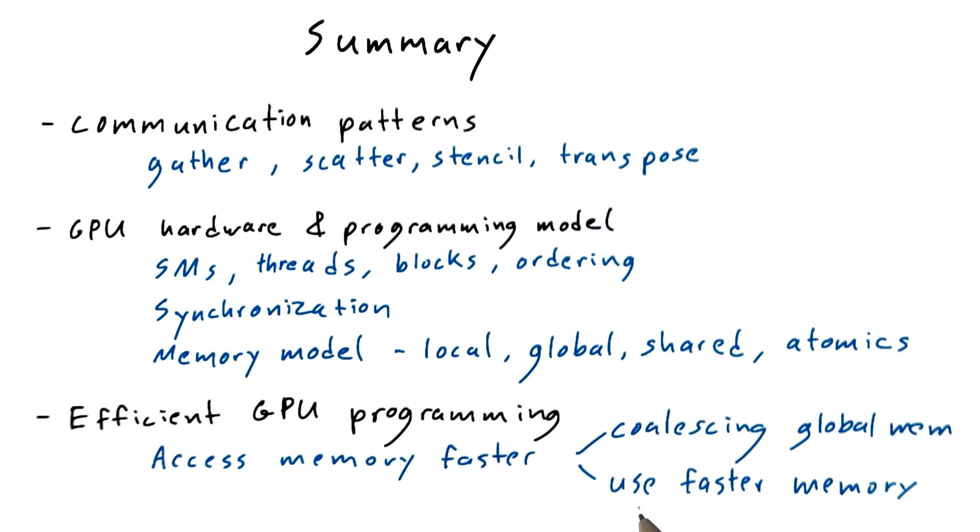We also learned to move frequently accessed data to faster memory, so for example, promoting data to shared memory. And we learned that atomic memory operations have a cost, but they're great and they're useful, and you shouldn't necessarily freak out about the cost. Often the cost is negligible, but it's something to be aware of.